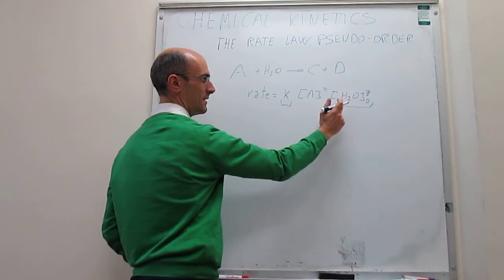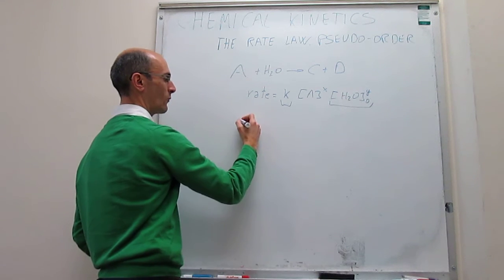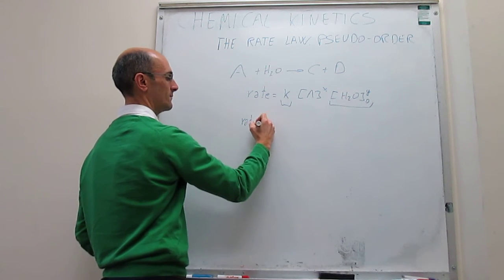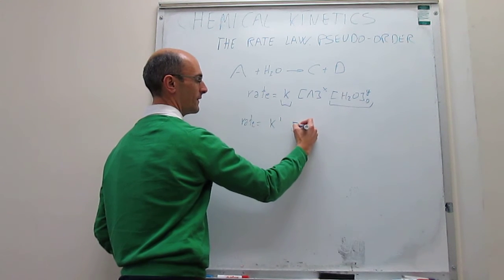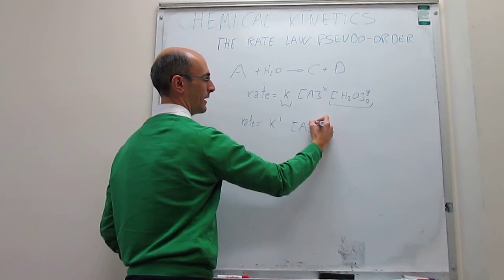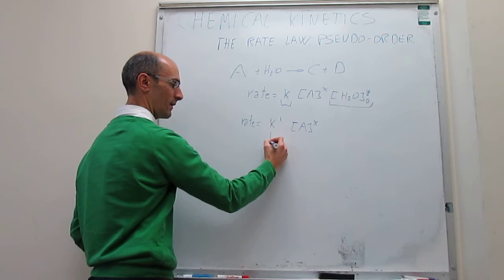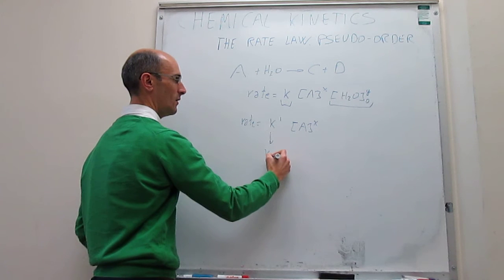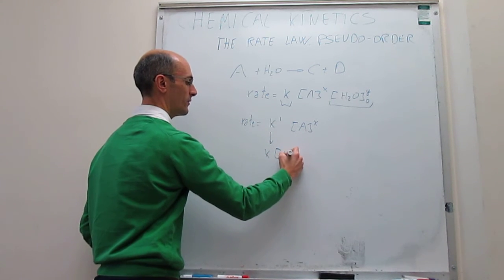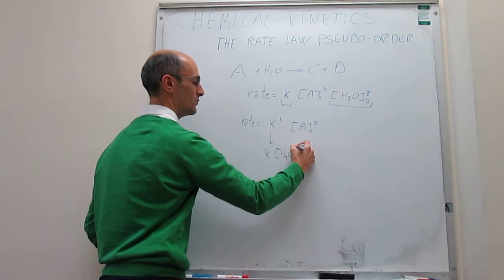Notice that this is a constant, and that is constant, so then we can rewrite this rate law as simply this. The rate is going to be equal to K prime multiplied by the concentration of A to the power of X, where this K prime is simply equal to K multiplied by the concentration of water that you had initially to the power of Y.